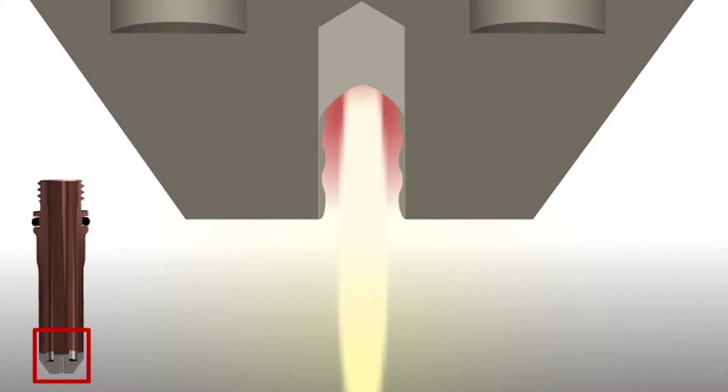Additionally, hafnium wets the silver much more effectively than it wets copper, providing a stronger physical bond between the hafnium and the electrode body.